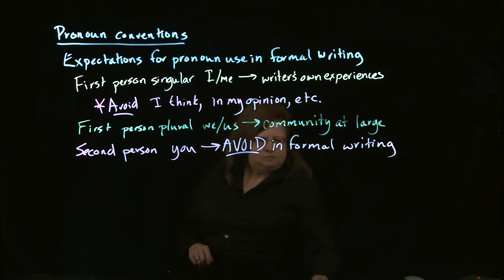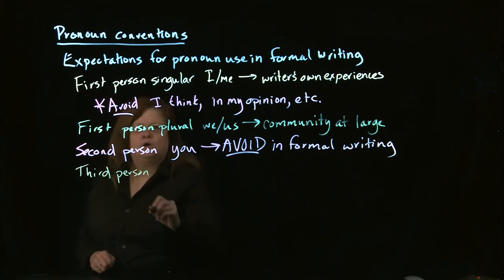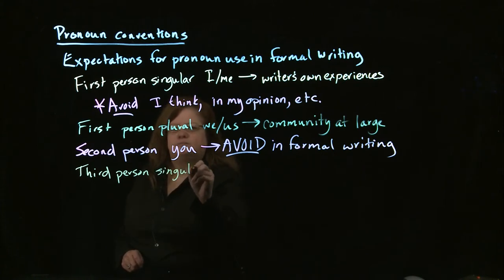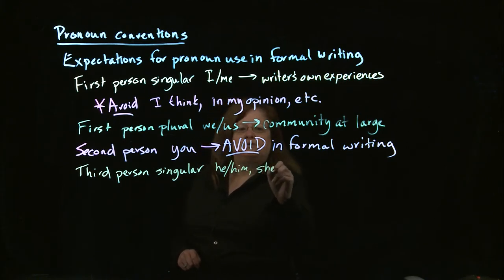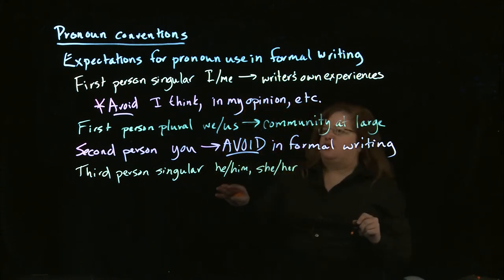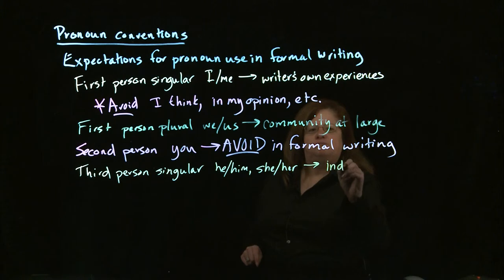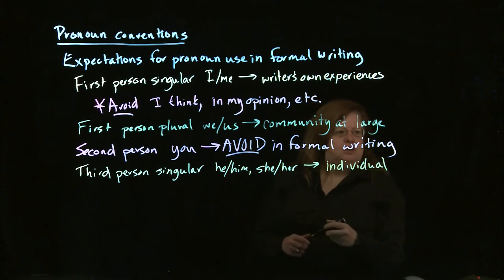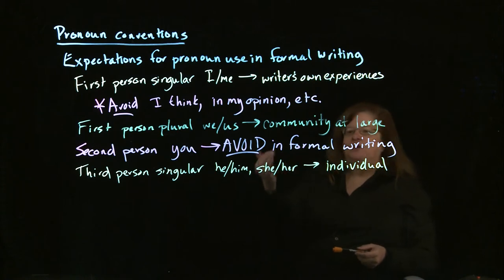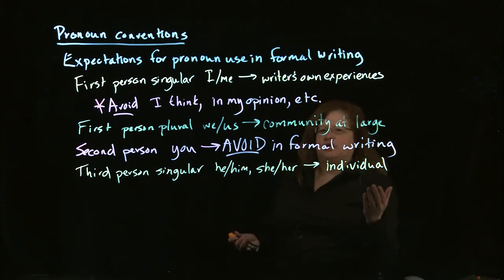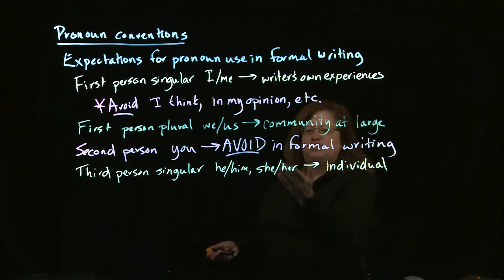So if we look at the third person, the third person singular is he and him or she and her. These can be a little bit tricky. What you want to remember is that this is going to be talking about an individual. So that's going to mean one person. You're not going to use he or she to talk about multiple people. You use it to talk about an individual. So if you're referring to a singular person, which could be a specific person, say Governor Martinez, and then you'd use she and her to refer to Governor Martinez for the rest of the essay.